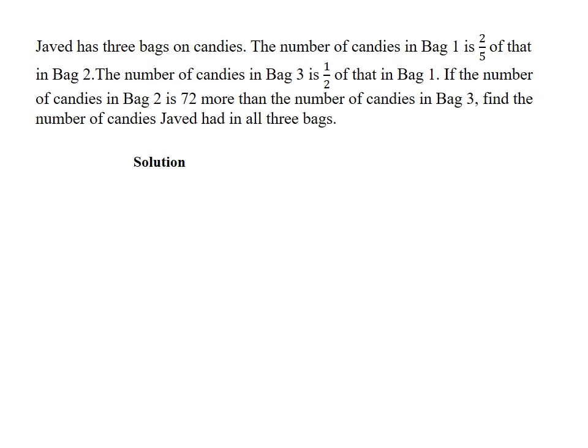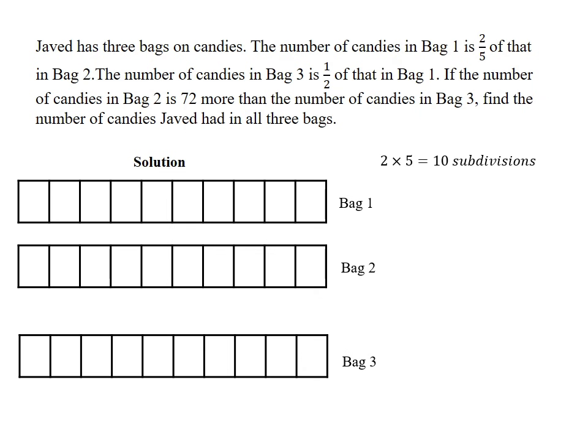The first thing we can do is multiply the denominators of both fractions. This would be two times five, which is ten. This would give us the number of subdivisions each model should have so that we can reduce the dependency on using excessive fractions to evaluate the problem. So these bars that are subdivided into ten units would represent the models.